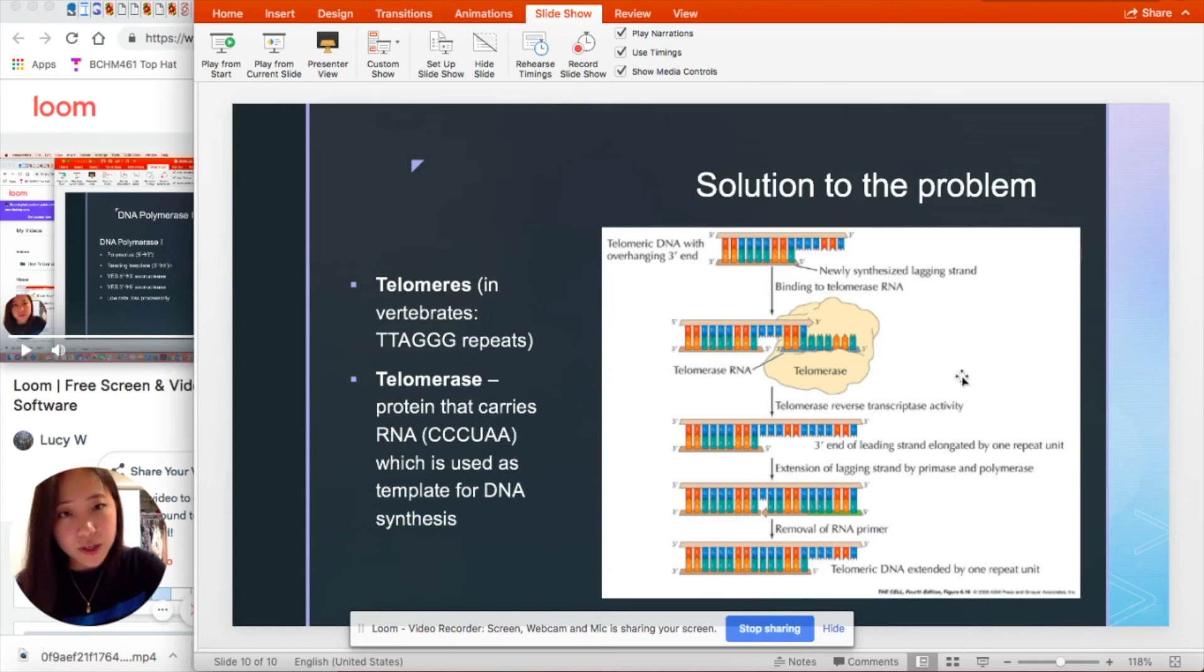So if we look at the diagram on the right, telomerase has the RNA. And it base pairs to the DNA strand to serve as a template strand. And it elongates the DNA at the three prime end of the leading strand by using the telomerase RNA.